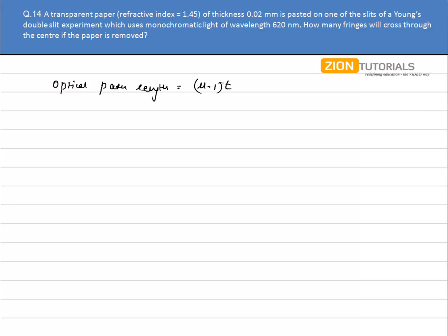I need to calculate the number of fringes that will cross the center if the paper is removed. The optical path length will produce some path difference. Let's say this is Δx. This is the path difference created by the slab.